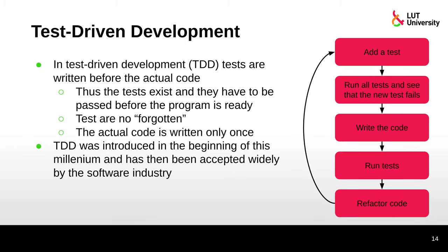How does TDD work? First you add a test — you write a new test — then you run all the tests, or at least the new test, to see that the new test fails. A test is not good if it passes without any actual code, so the test needs to fail first. Then you write the code and run the tests again to see whether the test passes or fails. If the test is still failing, you refactor the code, run the tests again, and then go to the next iteration to add new features.